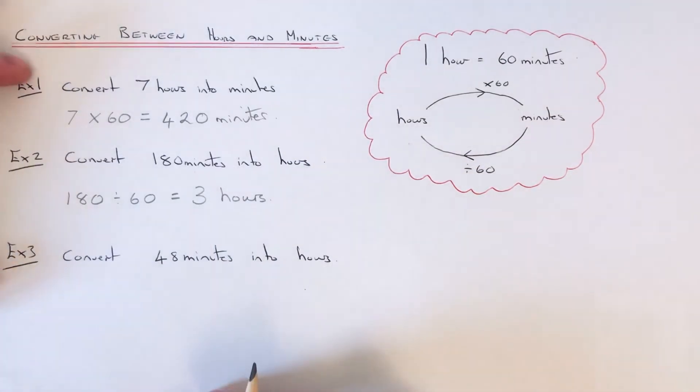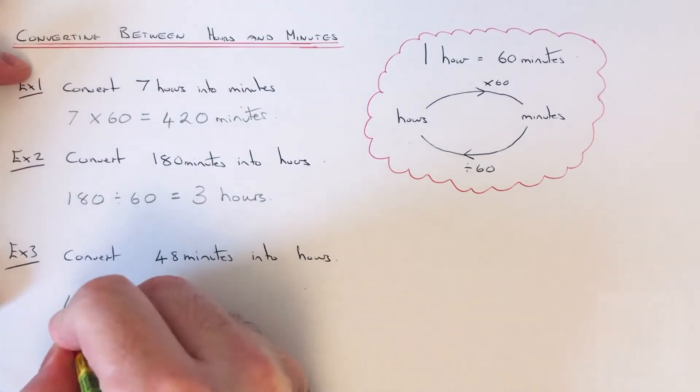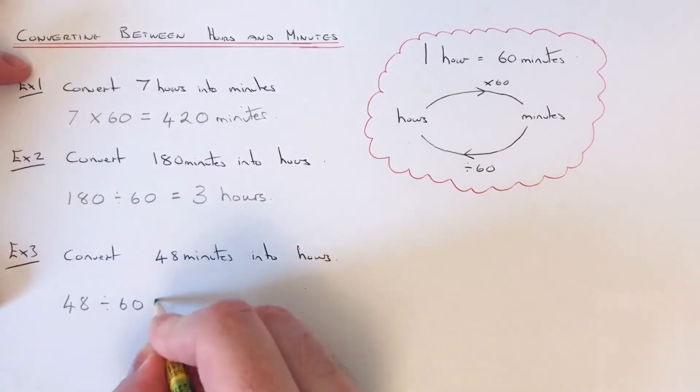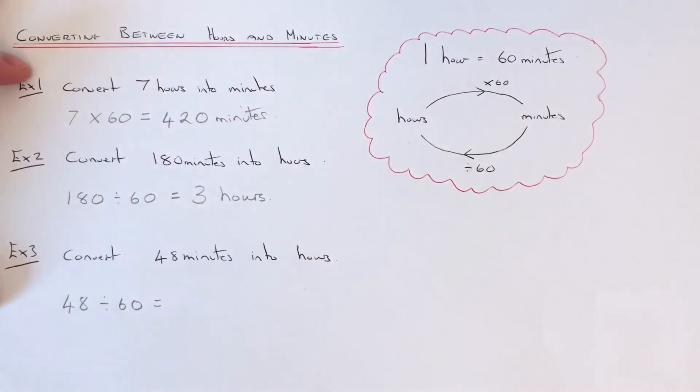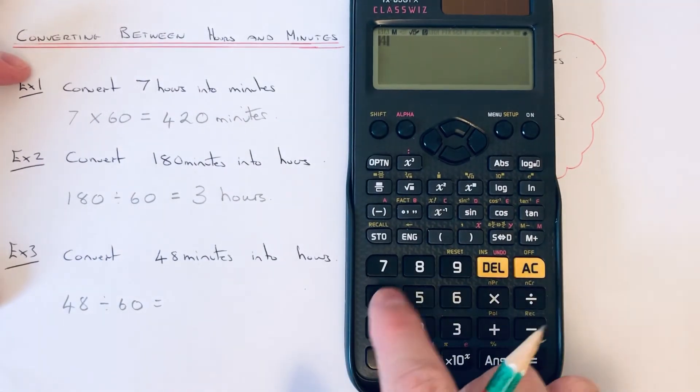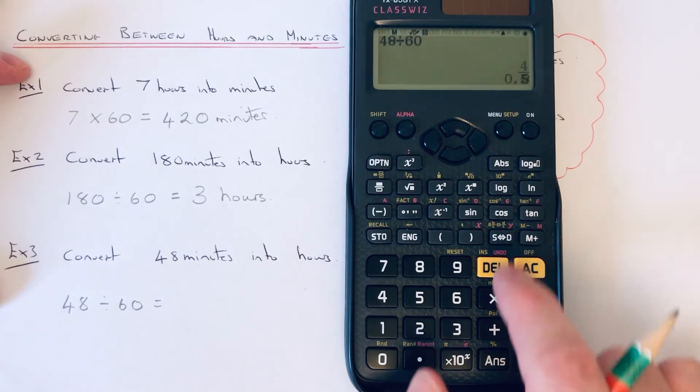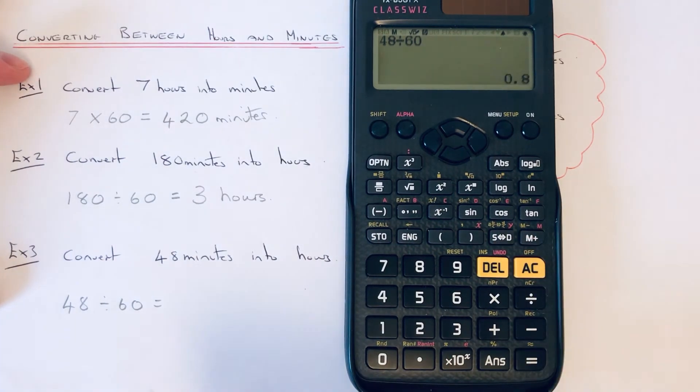And our final example, we've got to convert 48 minutes into hours. So again, minutes to hours, divide by 60. We put our number first, 48, and we have to divide that by 60. We do this one on the calculator this time, it's a little bit harder to work out. Okay, so we get 0.8 hours.